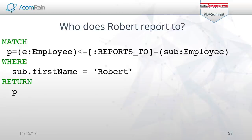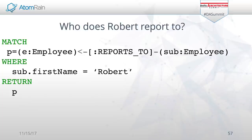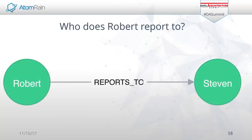In this one, we want to ask a very specific question: who does Robert report to? In Neo4j, we'll have created an index on the first name on the employee label. That allows Neo4j to use indexes to get to the starting node and then follow the pattern after that. When we find an employee named Robert, every node in the graph knows the nodes adjacent to it through pointers. So we can move from one node to the next and look at immediately all the employees that Robert reports to. In this case, it's just Steve.